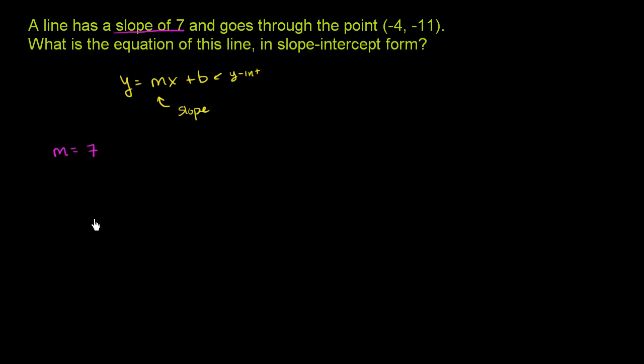So we know the equation of this line in slope-intercept form is going to look like y equals 7x plus b, since we know m is 7.